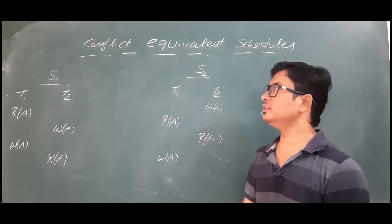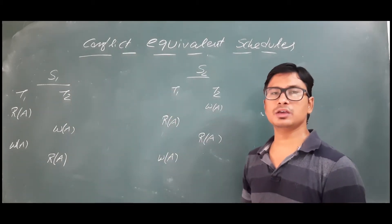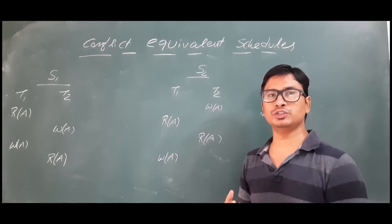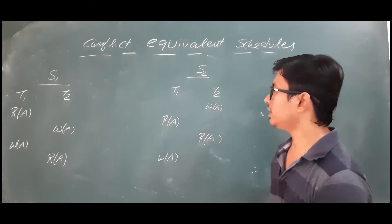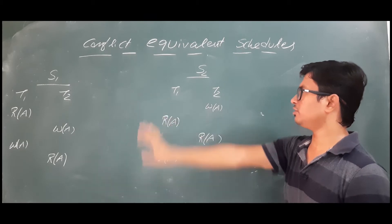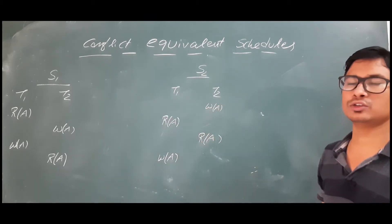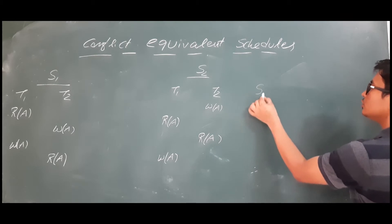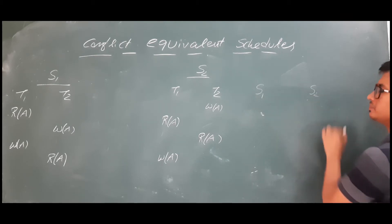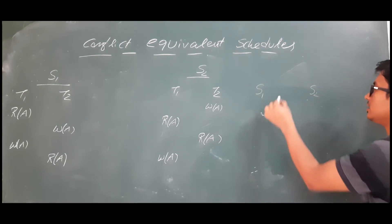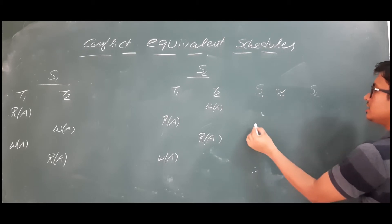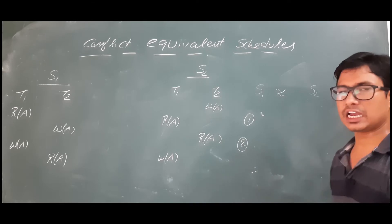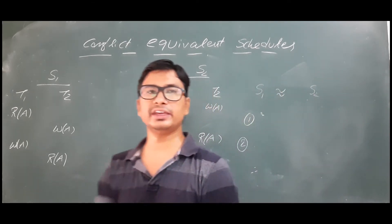Good morning students. In this video we will discuss how to find whether two schedules are conflict equivalent schedules or not. I will explain with two examples. First, let me introduce what is a conflict equivalent schedule. Let me take that I have two schedules S1 and S2. When can I say that they are conflict equivalent? They should satisfy two conditions.